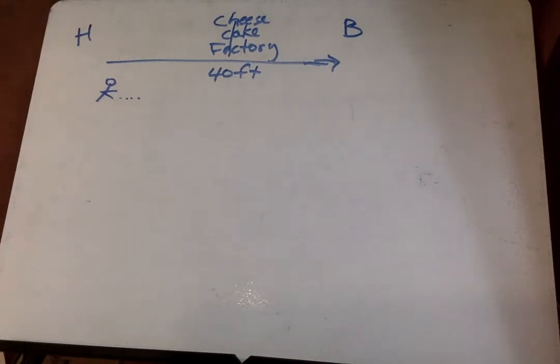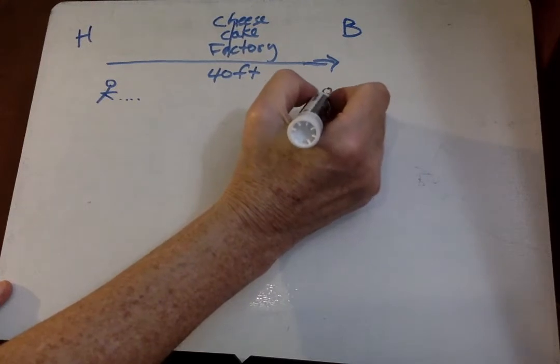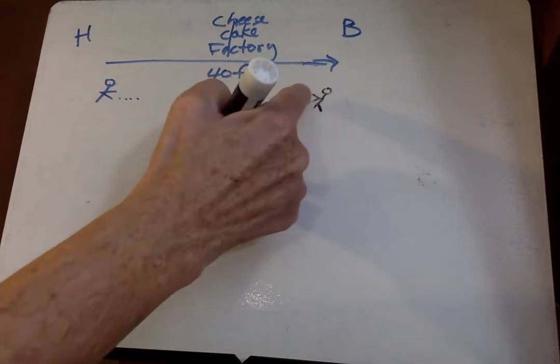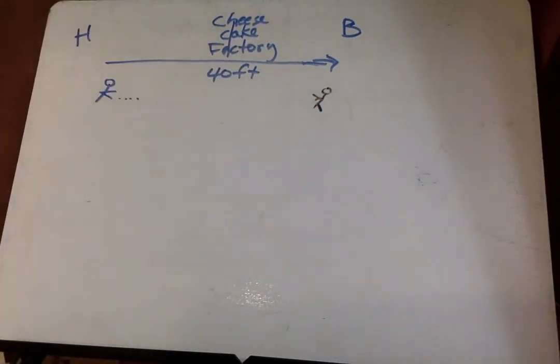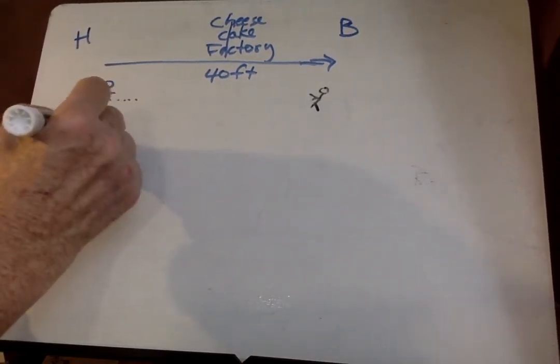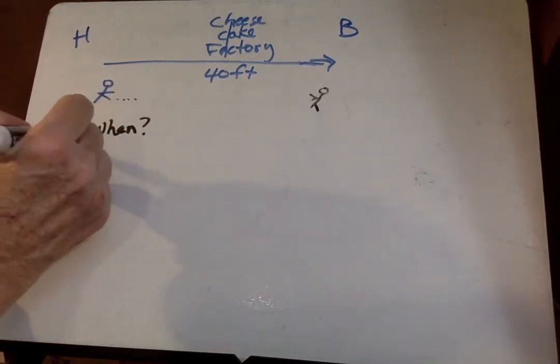Bernadette sees Howard four seconds later and starts walking towards him. So here she is. Says, I'm going to walk towards him. So she's walking towards him at four feet per second. Howard's moving at six feet per second. When do they meet? A is when. And then B, how far does each travel?